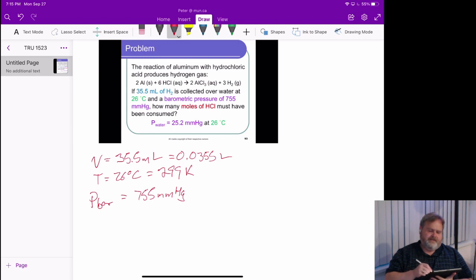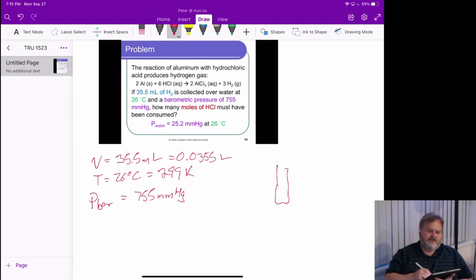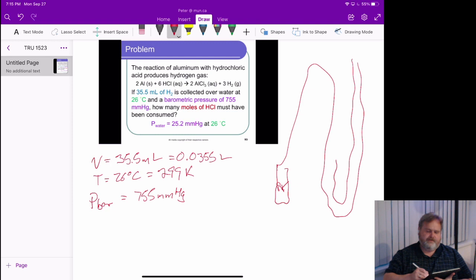And so what we have to account for though is this liquid in here, because we're collecting over water, is not mercury, it's water. And water has a nasty habit of vaporizing a little bit on us. Some of those molecules go into the gas phase. How many? Well, at a temperature of 26 degrees Celsius, enough to create a pressure.